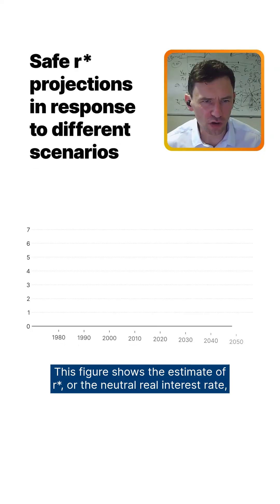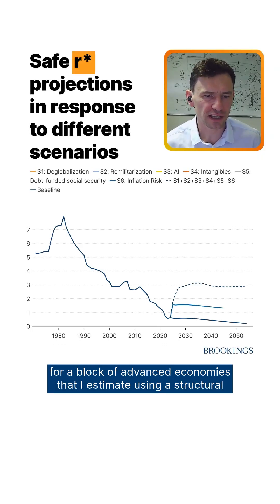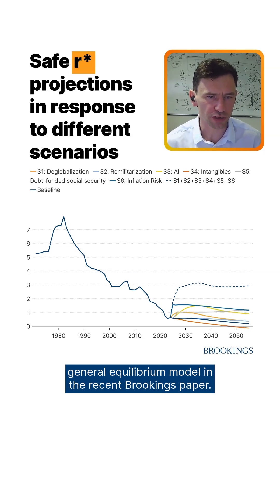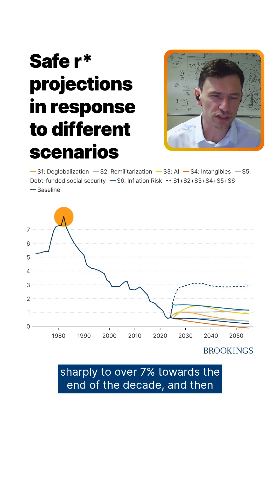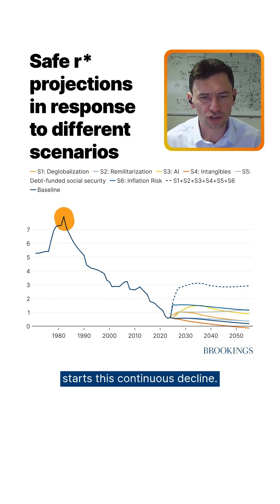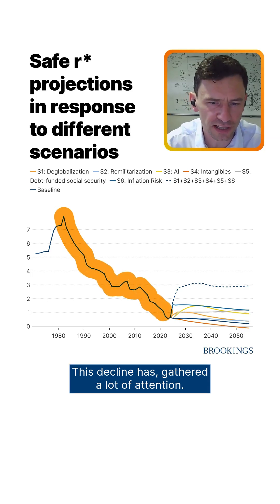This figure shows the estimate of R-star, or the neutral real interest rate, for a block of advanced economies that I estimate using a structural general equilibrium model in a recent Brookings paper. R-star is estimated to start at about 5% in the 1970s, increase sharply to over 7% towards the end of the decade, and then begin a continuous decline. This decline has gathered a lot of attention.